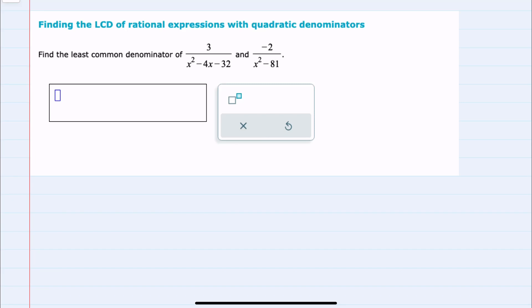In this video, I'll be helping you with the ALEKS problem type called Finding the LCD of Rational Expressions with Quadratic Denominators. We're asked to find the lowest common denominator of these two expressions, and for each of them I have a quadratic in the denominator.